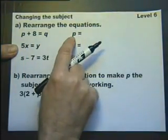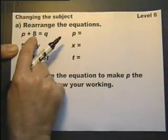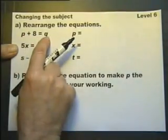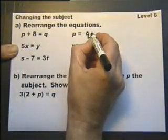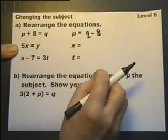We've got to rearrange it so it says P equals. If we consider this as P plus 8, we need to subtract 8 from this side, subtract 8 from the other side, and therefore we get P equals Q minus 8. P is now the subject.